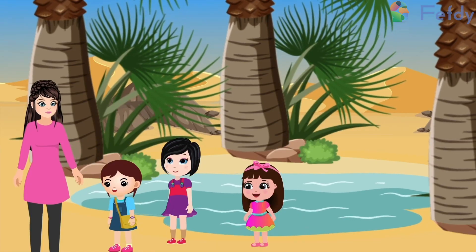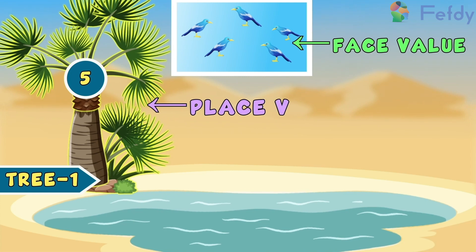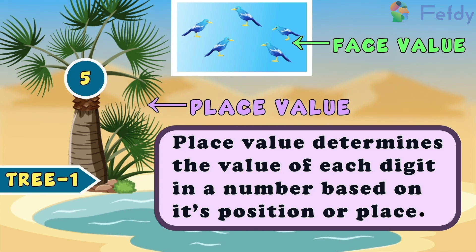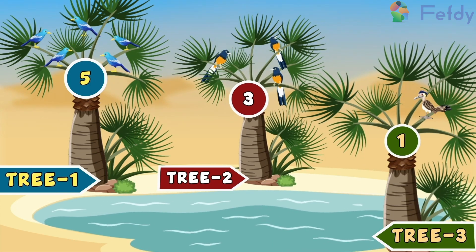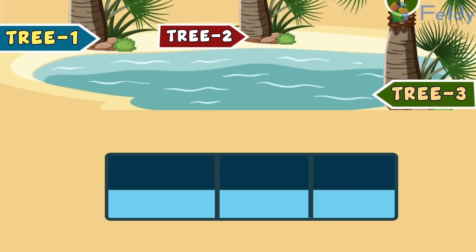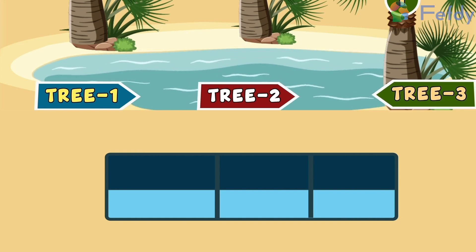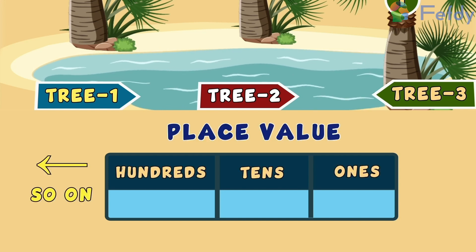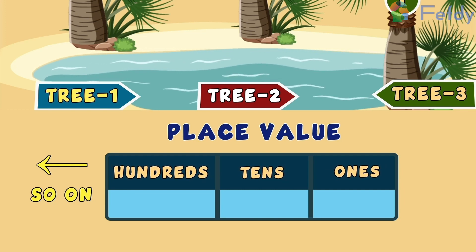Good job Latif. The birds hold face value and the date trees hold place value. Place value determines the value of each digit in a number based on its position or place. We have tree one, tree two and tree three. These trees are called place values in mathematics and we can call them ones, tens, hundreds and so on.